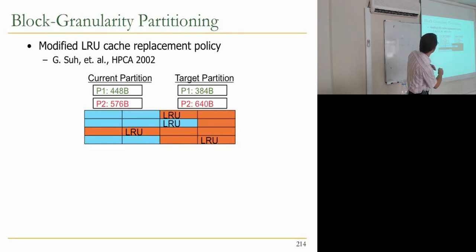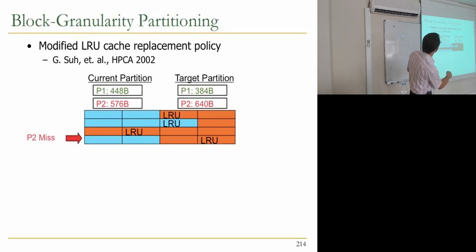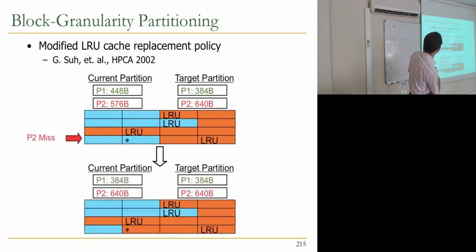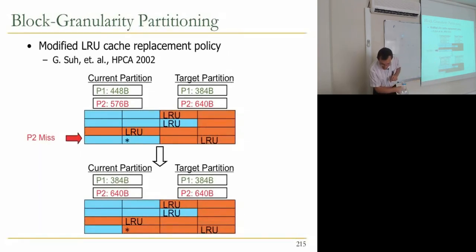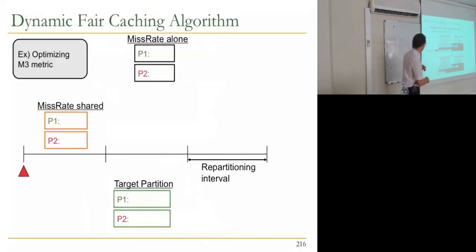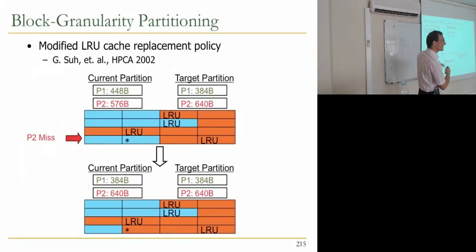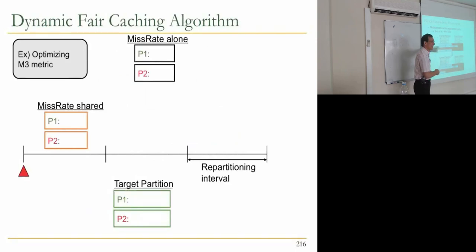How is it done? If processor 1 is occupying 448 bytes and processor 2 is occupying 576 bytes, and you want to reduce processor 1's allocation and increase processor 2's: whenever P2 gets a cache miss, you evict a block from P1. You get the miss rate alone — though this paper runs the application alone for a while to measure it, which has throughput implications — and compute miss rate shared.